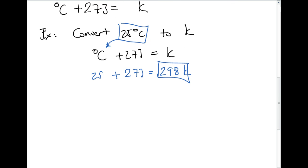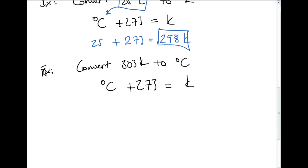We'll do one more problem here real quickly. So we're going to convert 303 Kelvin to degrees Celsius. So again, we're going to use the formula. Degrees Celsius plus 273 equals Kelvin. And we're going to plug the value of 303 Kelvin in right there. So degrees Celsius plus 273 equals 303 Kelvin.